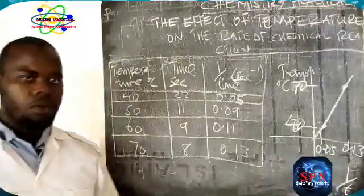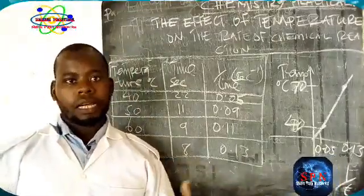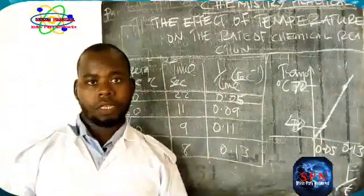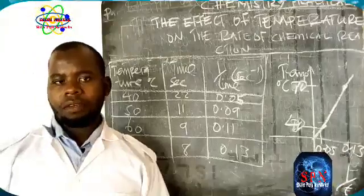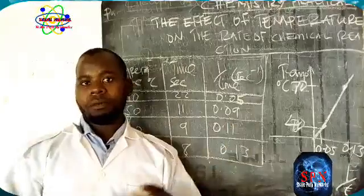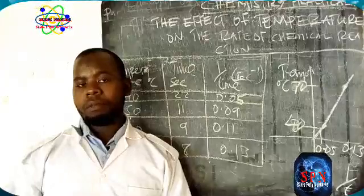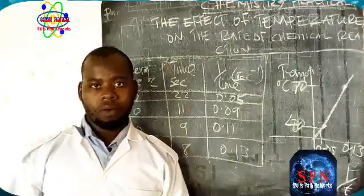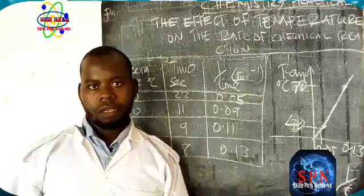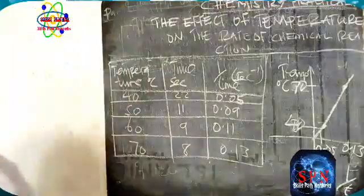Using these methods you can perform the experiment with other chemicals — you can use nitric acid or use potassium permanganate, where its purple color disappears, which can also be used to study the rate of chemical reaction. Thank you for listening to this lesson. We will meet in another lesson.